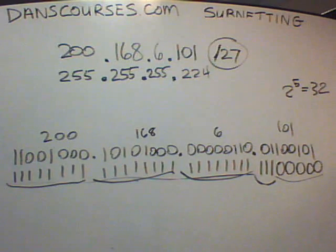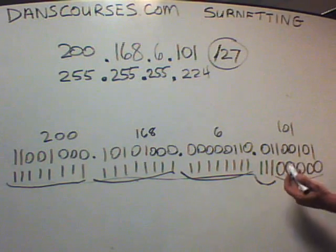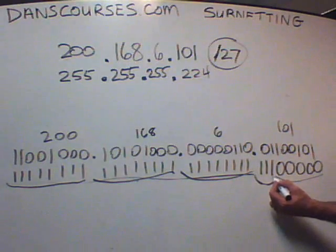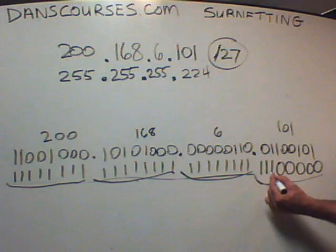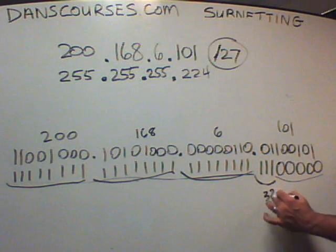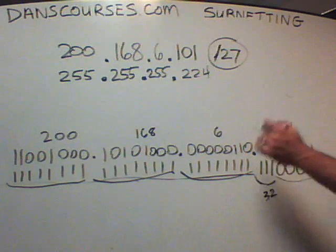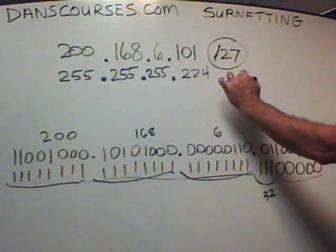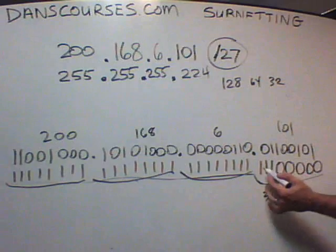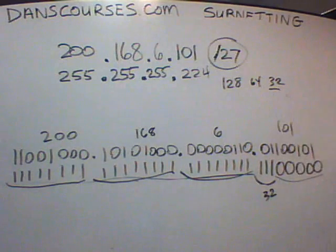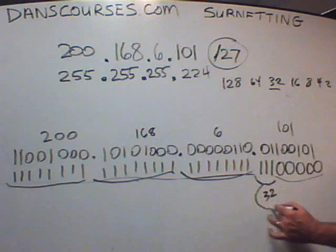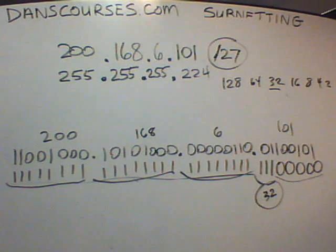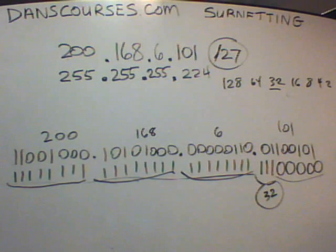That last bit we borrowed is the magic number. It has a value — it's in the 128, 64, 32 place. It is in the 32 place, and that is its value. The magic number in this situation is 32, and it tells us where the networks are. That is so valuable in the Cisco CCNA.